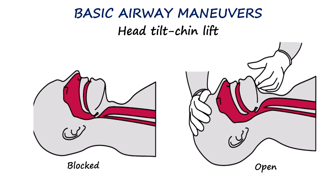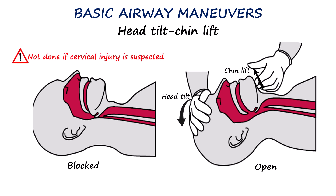The most commonly used maneuver to open the airway is the head tilt-chin lift. To perform this, the rescuer stands at the patient's head and places one hand firmly on the forehead to gently tilt the head backward. The fingers of the other hand are placed under the bony part of the mandible to lift the chin upward. This combined motion moves the tongue away from the back of the throat, helping to clear the airway. However, this technique should not be performed if a cervical spine injury is suspected.